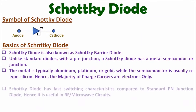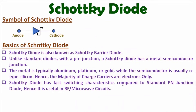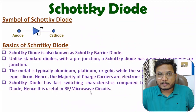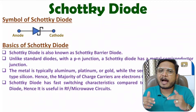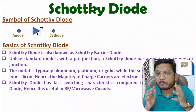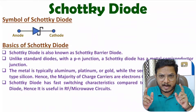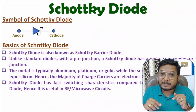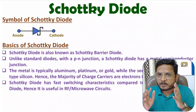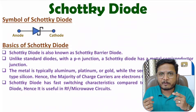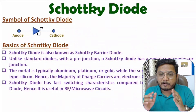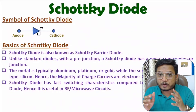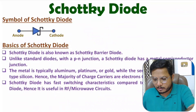The Schottky diode has faster switching characteristics compared to a standard PN junction diode, which makes it suitable for use in RF or microwave circuits. In microwave, the frequency range is from 1 GHz to 300 GHz, so we need faster switching. With a conventional PN junction diode we cannot achieve that fast switching, but with a Schottky diode we can — that's why we use it in microwave applications.